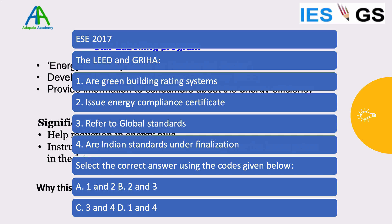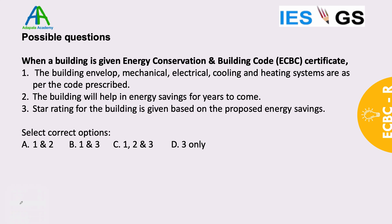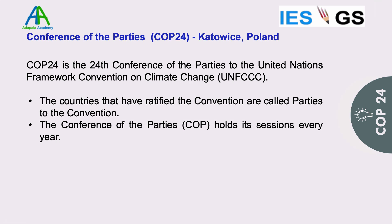In 2017 there was a question on LEED and GRIHA, which are green building rating systems. A practice question on ECBC-R: Option one — building envelope, mechanical, electrical, cooling and heating systems are as per the code (the first part only covers envelope, but subsequent parts will cover mechanical and electrical systems, so this is a comprehensive code). Option three — star rating is given based on proposed energy savings (incorrect; it is based on energy savings actually achieved). The code sets standards for building design, and once built, star ratings are awarded based on achieved energy savings.